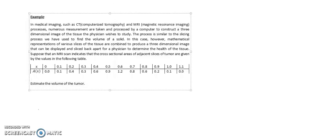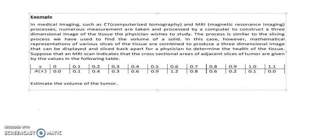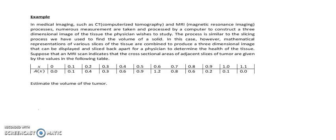Let's discuss one example. Let's see this sentence here. This is the important statement in this question. Suppose that an MRI scan indicates that the cross-sectional areas of adjacent slices of femur are given by the values in the following table. The values inside the table is the cross-sectional area and also the adjacent slices of a femur. The area is given by AX and the adjacent slices of femur is given by the values of X. And the question is, estimate the volume of the femur.